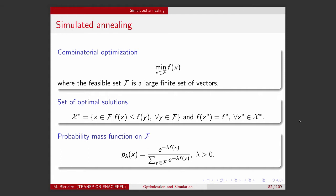I will consider an optimization problem — a minimization problem. We call it a combinatorial optimization because the set of feasible solutions is large and finite. I will denote by x-star the set of optimal solutions, and by f-star the value of the objective function at an optimal solution. Depending on the problem, you can have one or several optimal solutions, but x-star is the set of all optimal solutions.